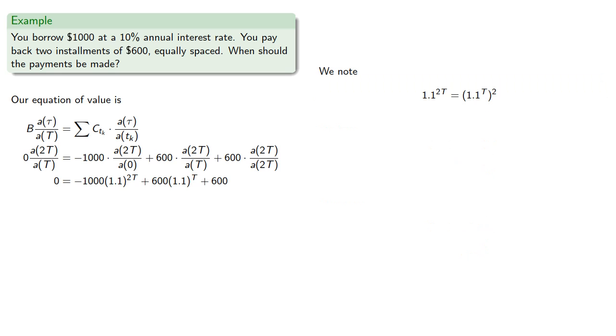Now, we note that 1.1 raised to power 2t, well that's really the same as (1.1 to the t) squared. So we can make the substitution x equals 1.1 to the t, x squared is 1.1 to the 2t, and reduce our equation to quadratic.